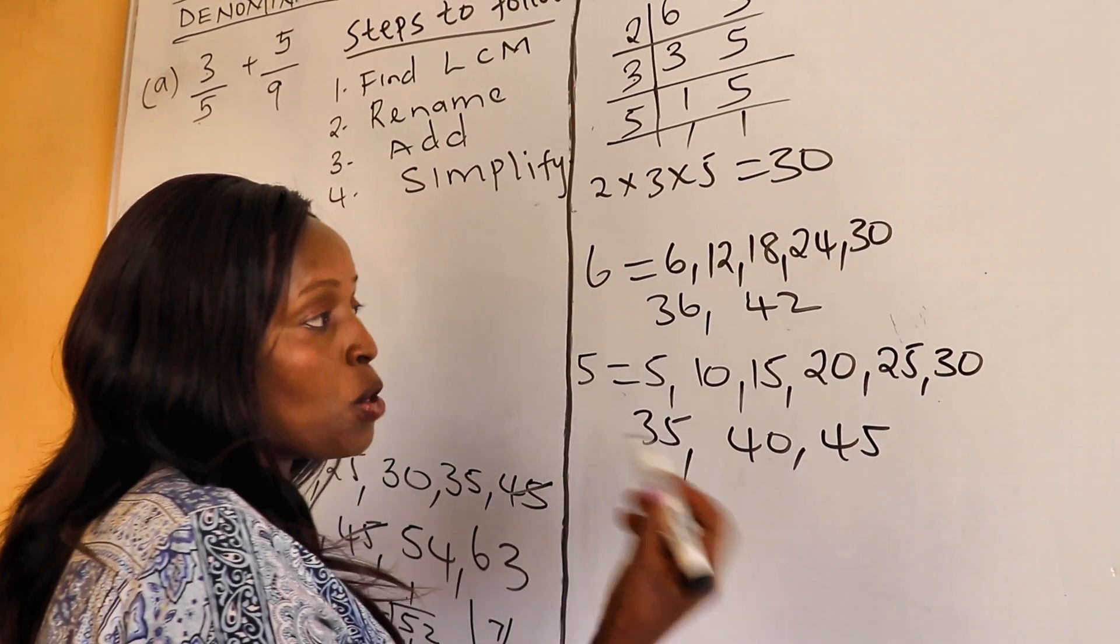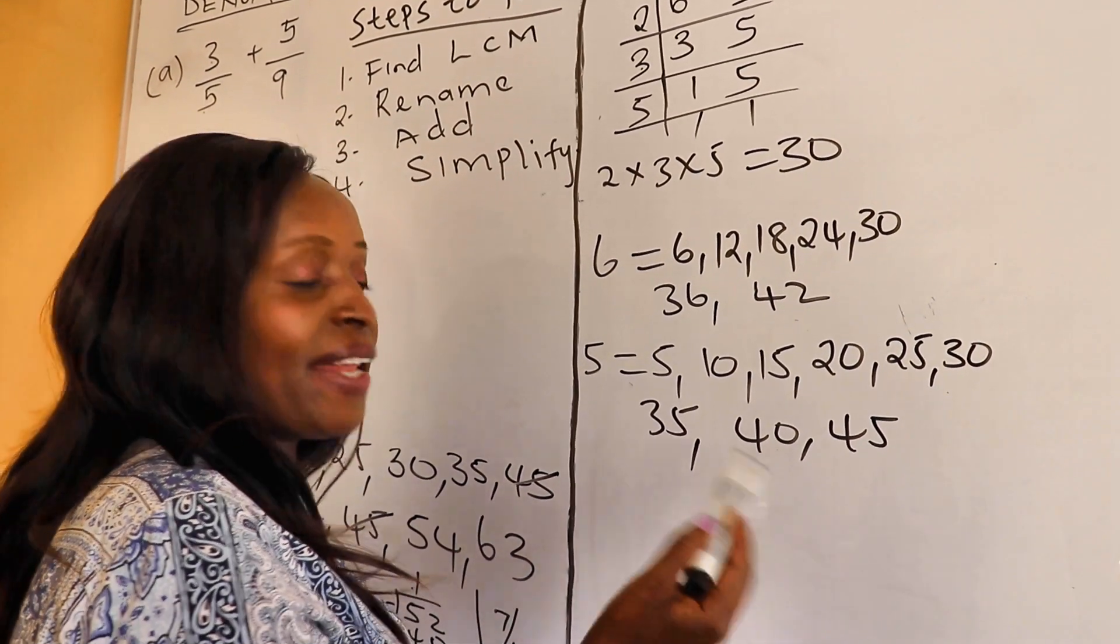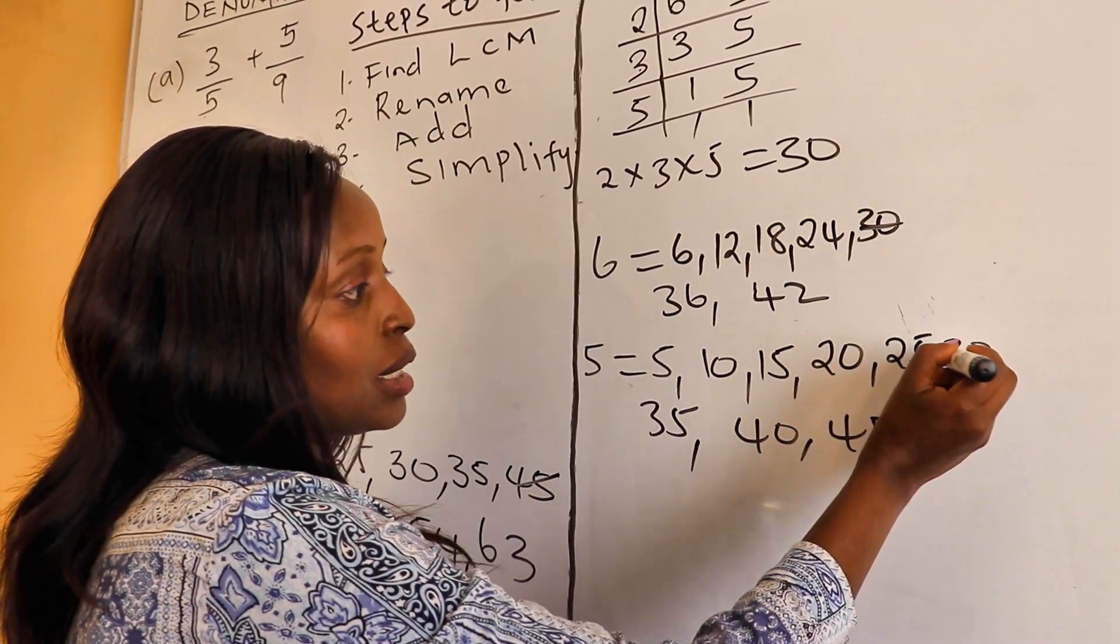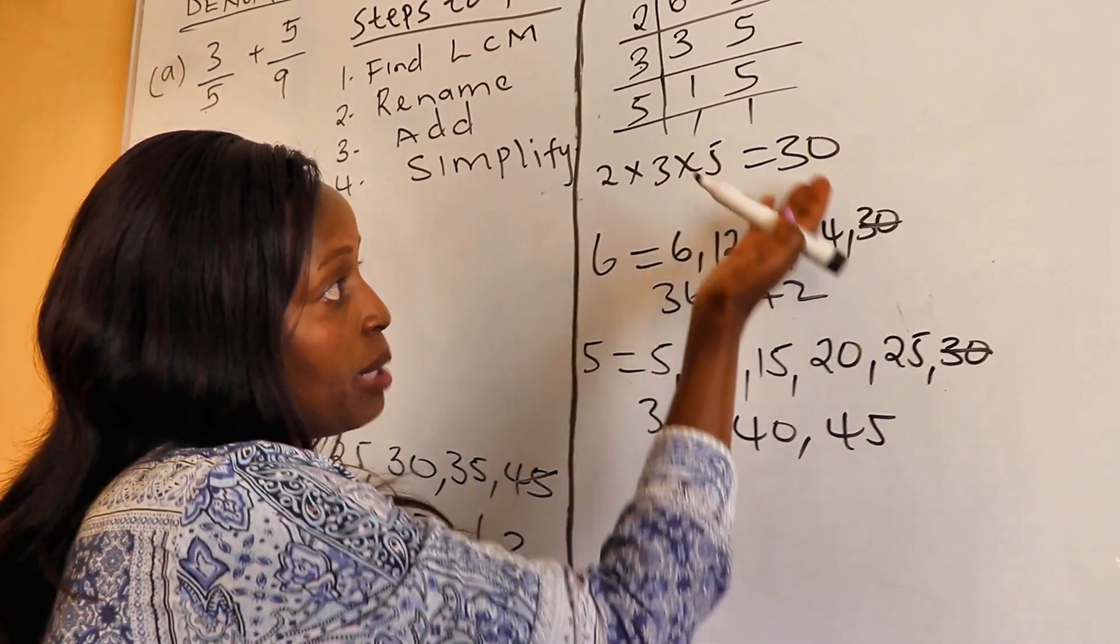And therefore, now we look for a common multiple. And the common multiple is 30. Therefore, our LCM is 30.